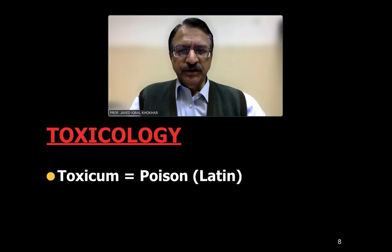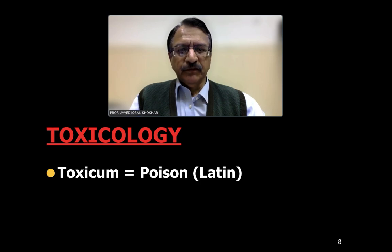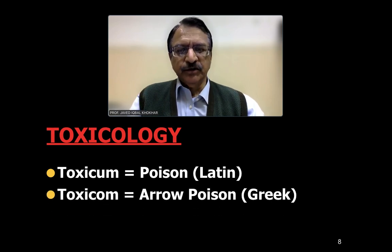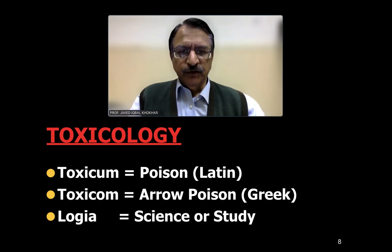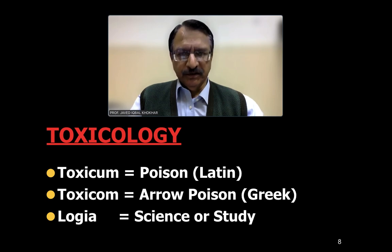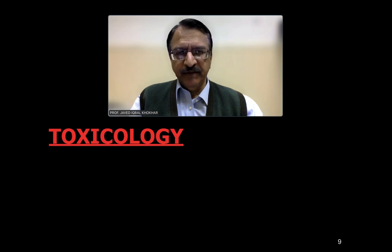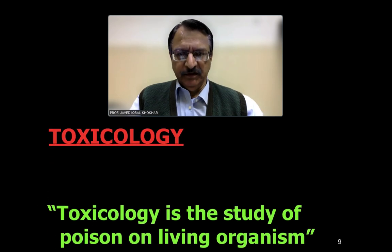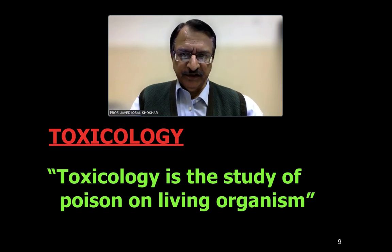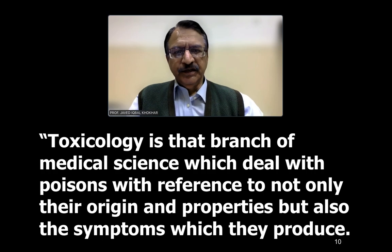Toxicology comes from the word 'toxicum,' which means 'poison' in Latin, and another word 'toxicum' which is a Greek word meaning 'arrow poison.' The suffix '-logia,' as we know, is the study of a science. So toxicology means the study of poison — the study of various drugs or chemicals, and in a broader sense, the poisons. Toxicology is the study of poisons on the living organism and it's a branch of science.